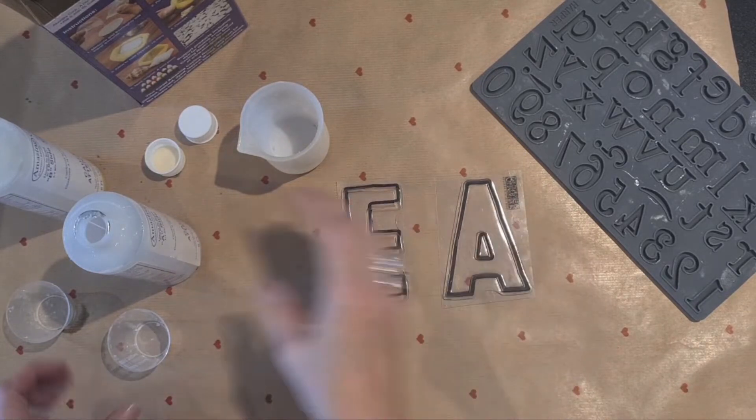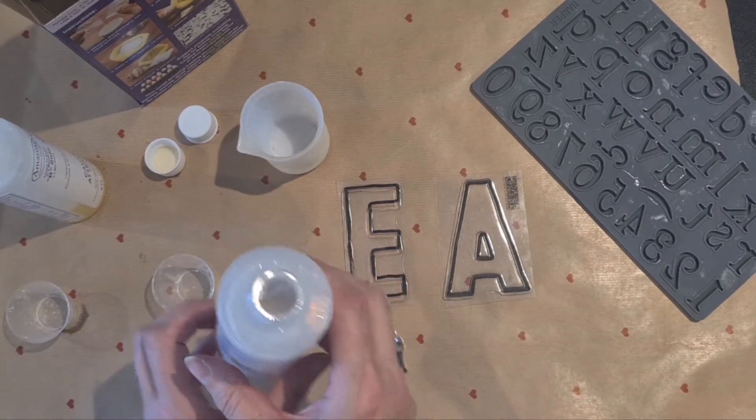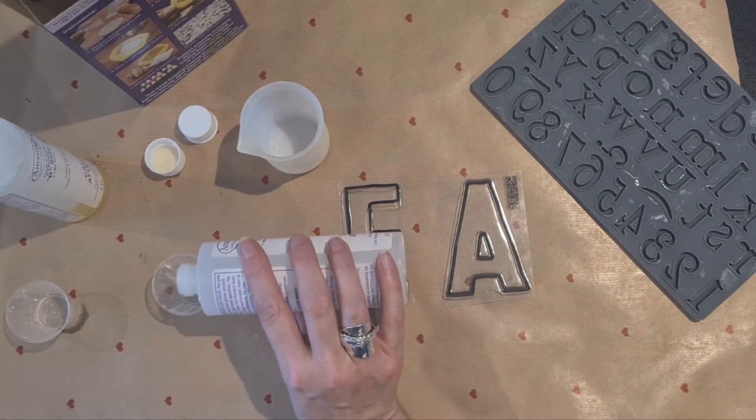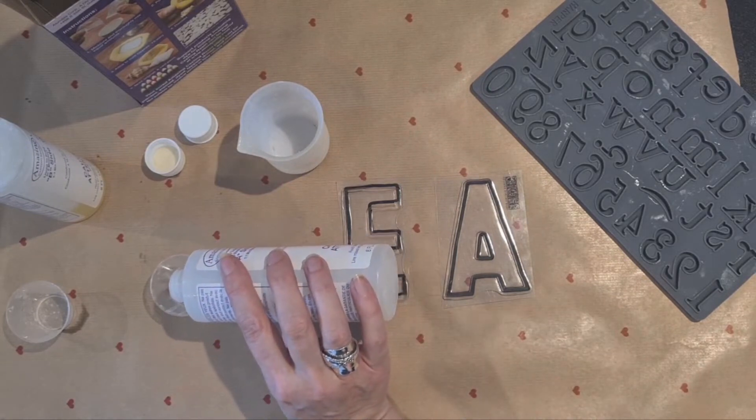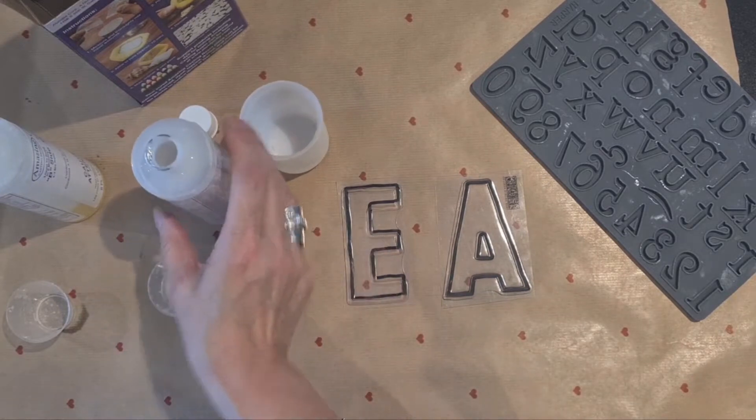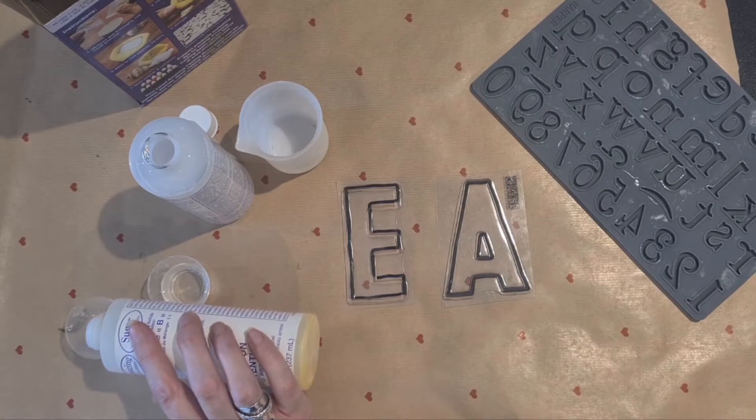So I don't need very much for this but I'm going to pour probably 10 ml of each and you need a 50-50 mix with this Amazing Casting Resin. So I'm going to do 10 ml of that part and 10 ml of this.